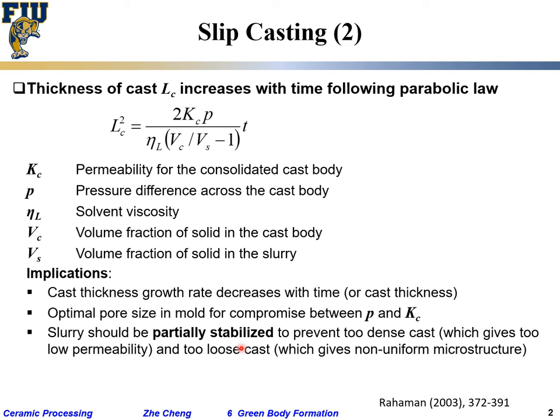We said earlier you can stabilize your slurry by adding electrolyte or polymer, but here you do not want the suspension to be too stable. If it is too stable, when the particles pack they give too dense a green body in the already consolidated part, which prevents the solvent from going away and makes the casting process too slow.